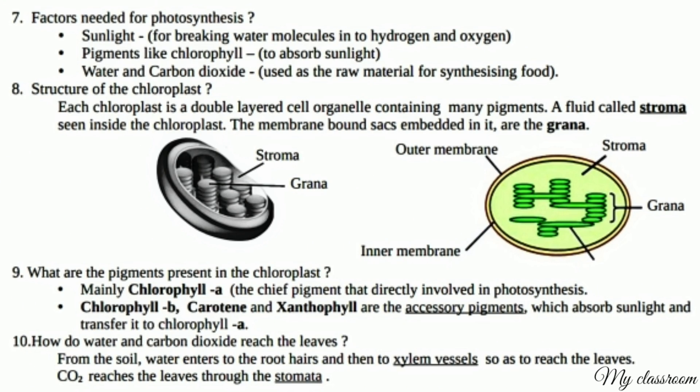Factors needed for photosynthesis: Sunlight, for breaking water molecules into hydrogen and oxygen. Pigments like chlorophyll, to absorb sunlight. Water and carbon dioxide, used as raw materials for synthesizing food.